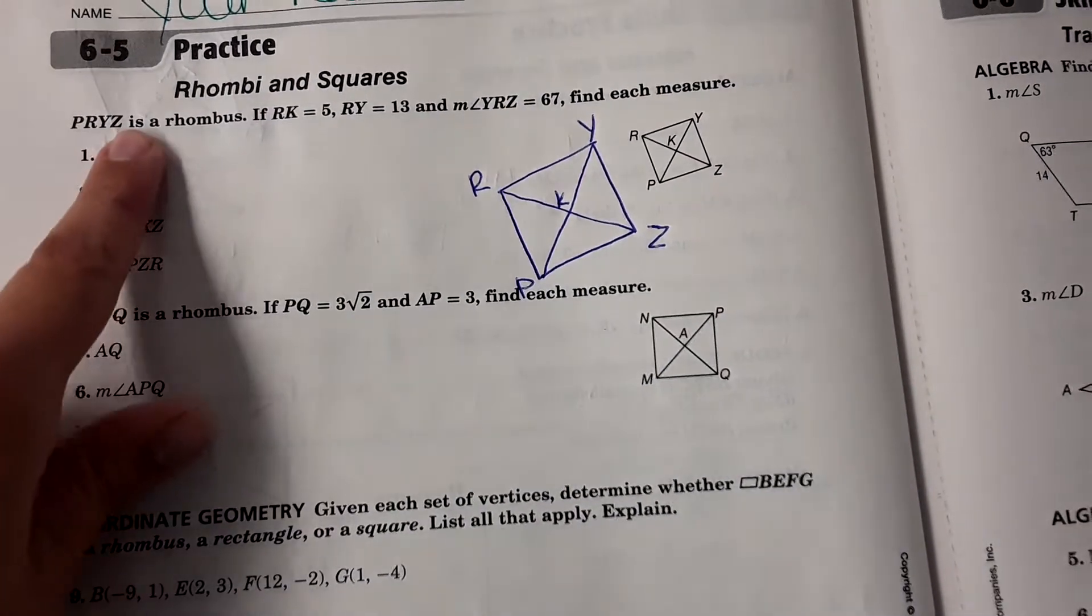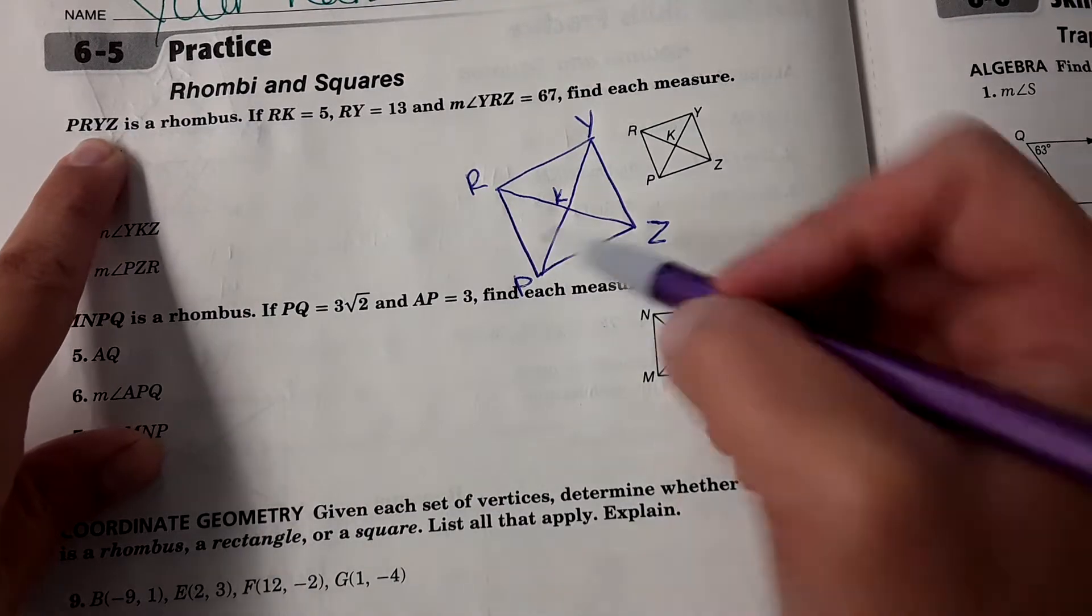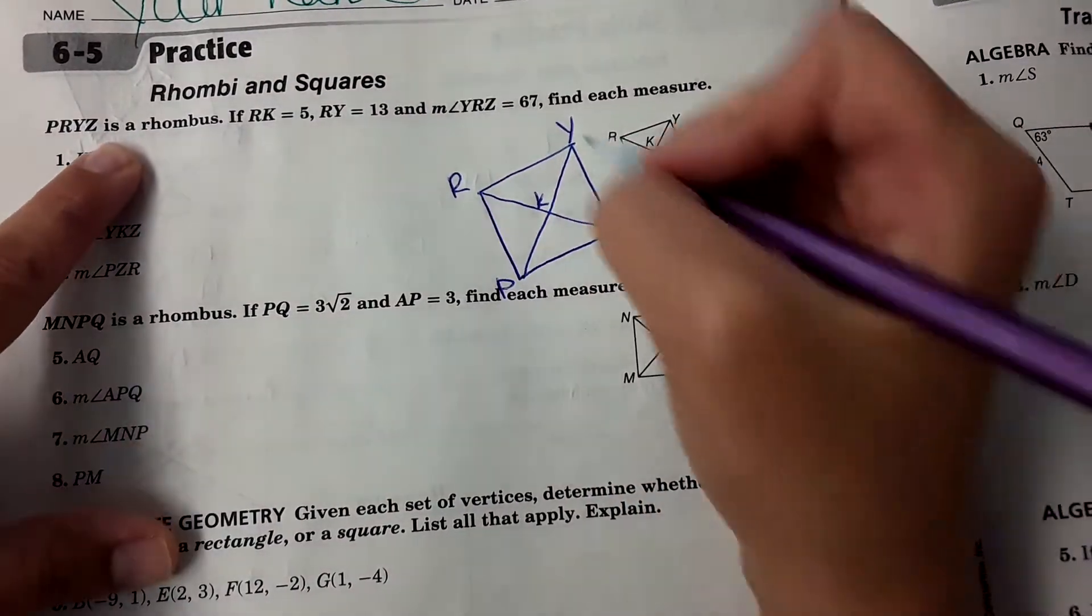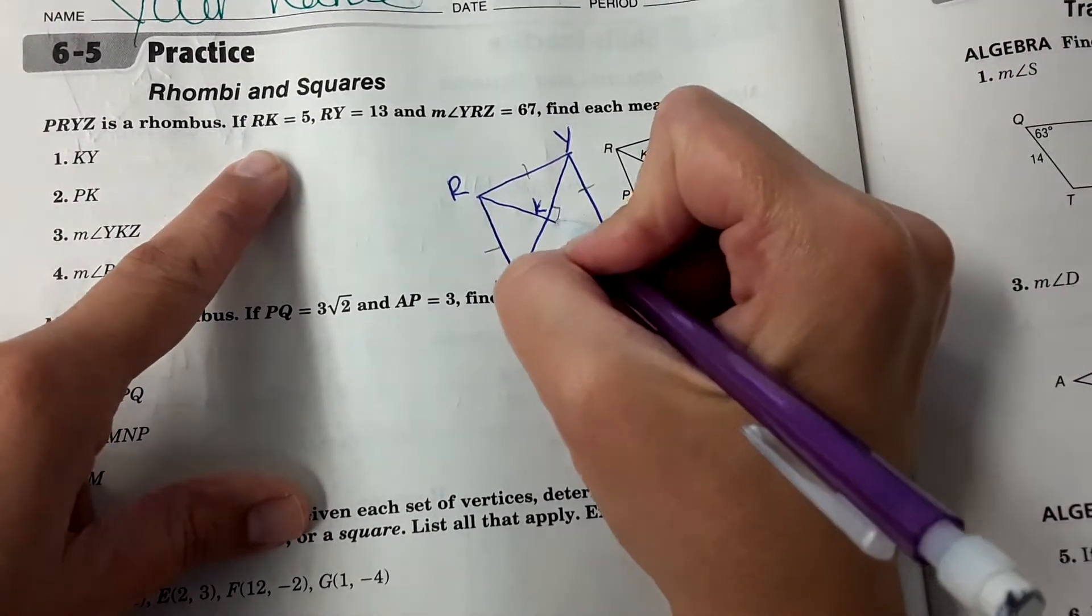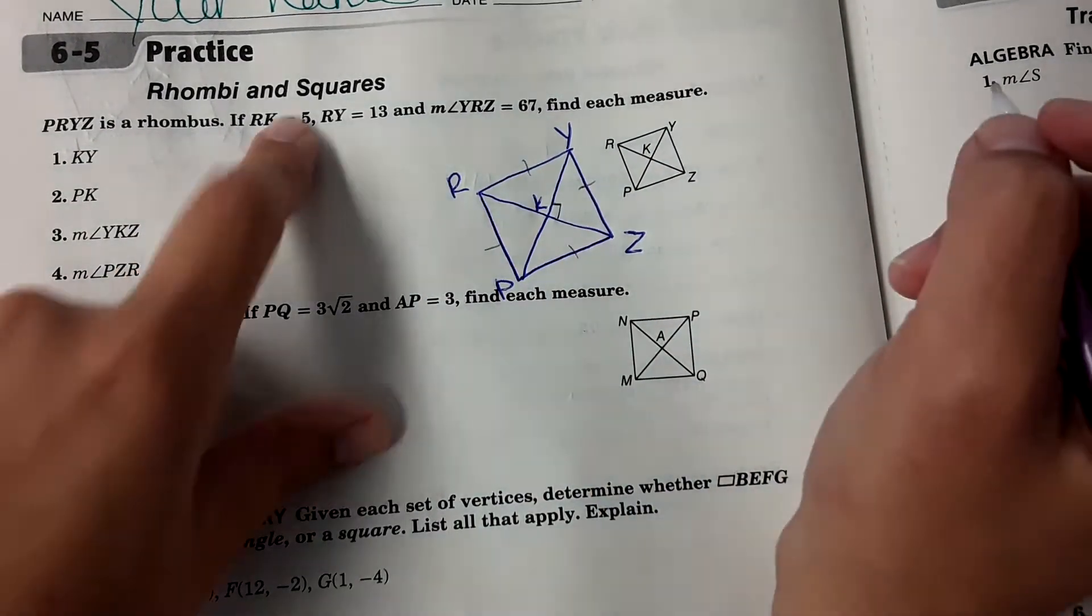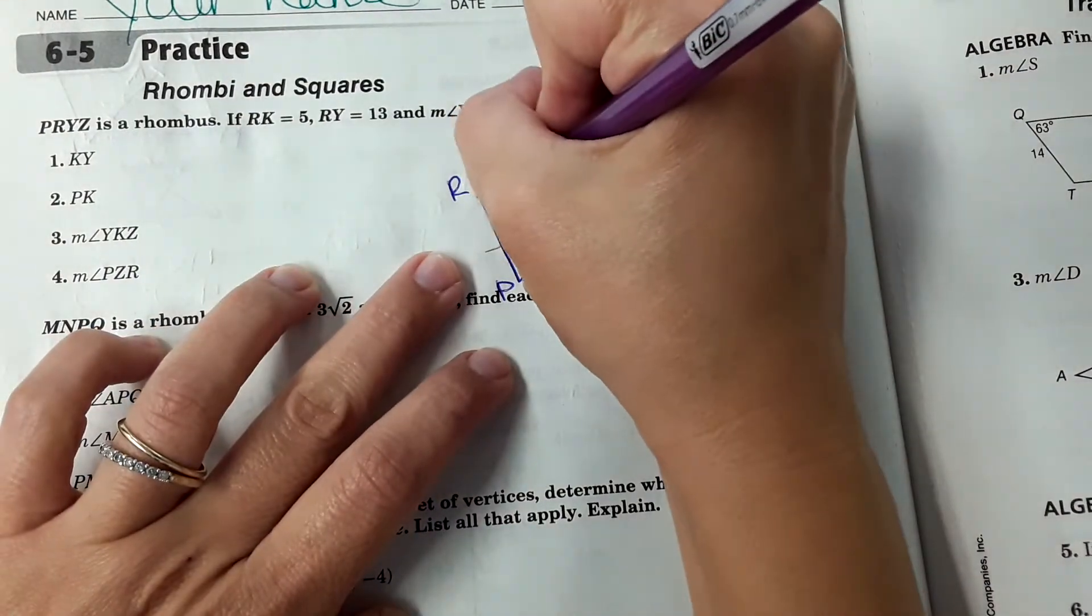Okay, so it gives us some measurements here. It says PRYZ is a rhombus. Okay, that means all the side lengths are the same measure. It also means that this is perpendicular, this is a 90 degree angle.